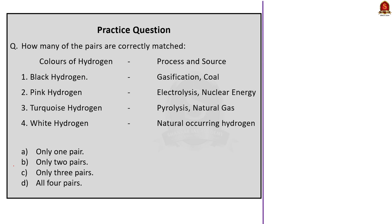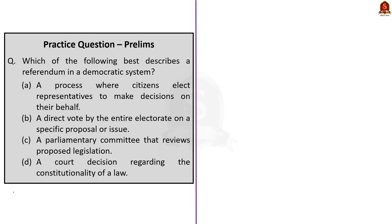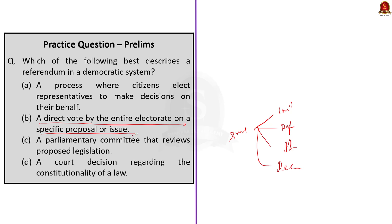The third question asks how many of the following pairs are correctly matched — colors of hydrogen with their process and sources. Black hydrogen is sourced from gasification and coal — correct. Pink hydrogen comes from electrolysis and nuclear energy — correct. Turquoise hydrogen comes from pyrolysis and natural gas — correct. White hydrogen is the naturally occurring hydrogen — correct. All four pairs are correctly matched, so the correct option is option D. The fourth and final question asks which statement best describes a referendum in a democratic system. A referendum is a direct vote by the entire electorate on a specific issue or proposal. The correct option is option B.